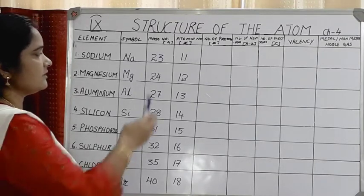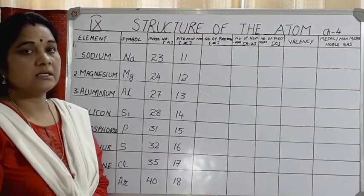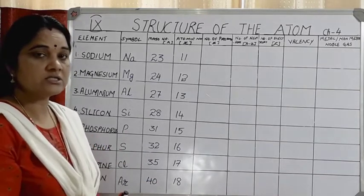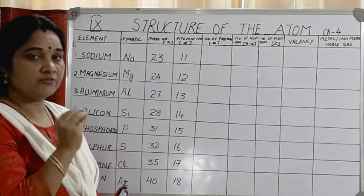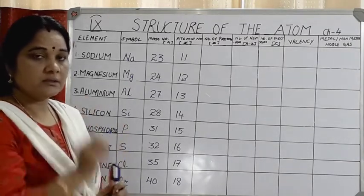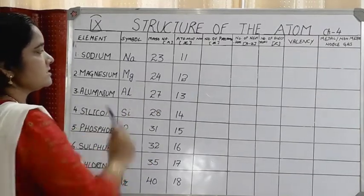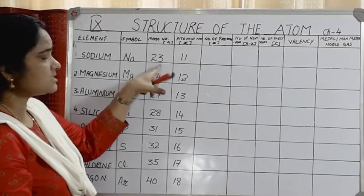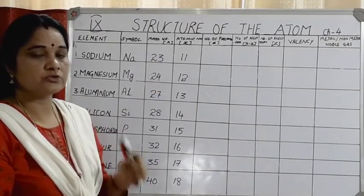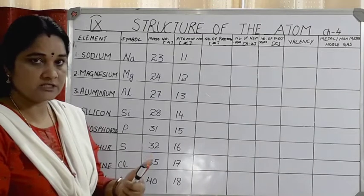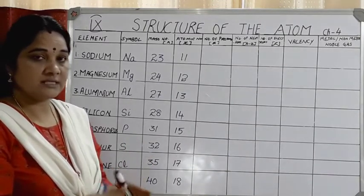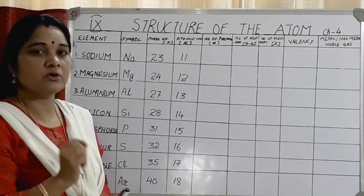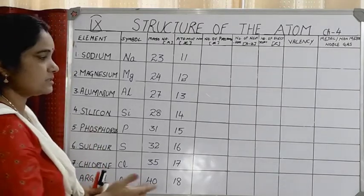The mass number is represented by the letter A, and atomic number by Z. Mass number is nothing but protons plus neutrons — collectively called nucleons. The mass of an atom is concentrated in the nucleus. There are three subatomic particles: protons (positively charged, mass = 1 unit), neutrons (no charge, mass = 1 unit), and electrons (negatively charged, mass ≈ 0).